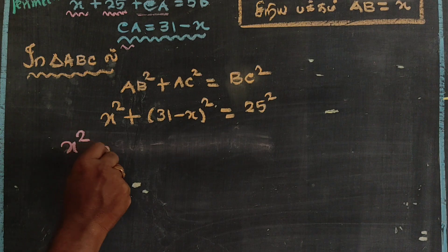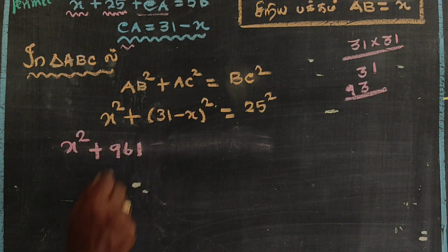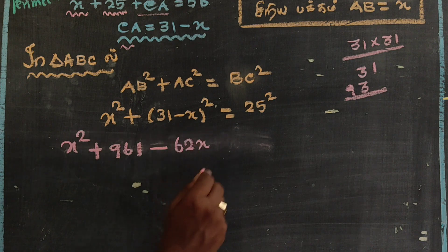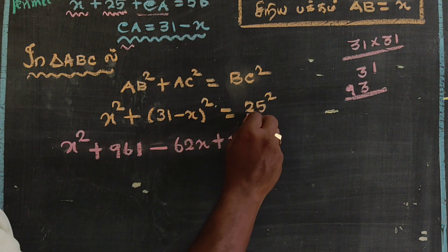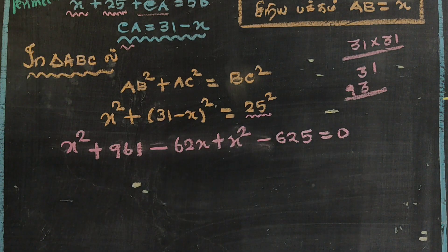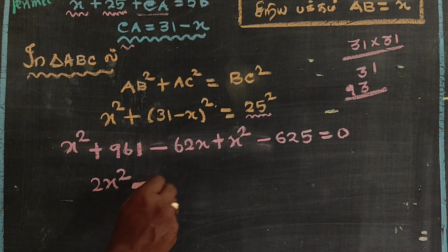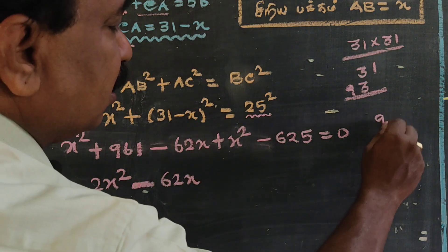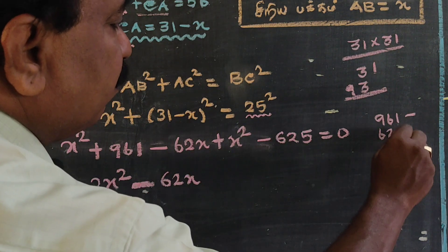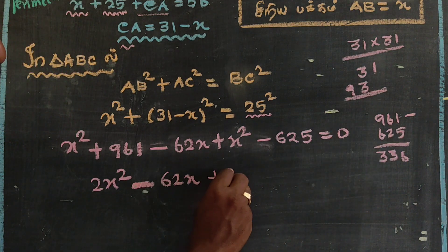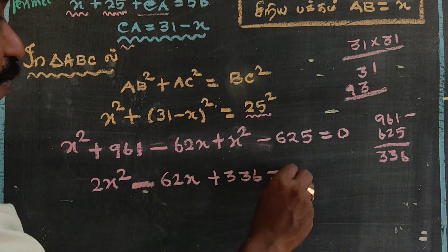Expanding: x squared plus 961 minus 62x plus x squared equals 625. So 2x squared minus 62x plus 961 minus 625 equals 0, which gives 2x squared minus 62x plus 336 equals 0.